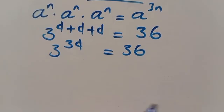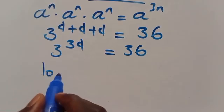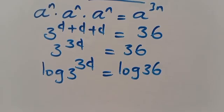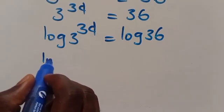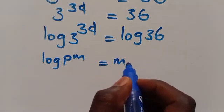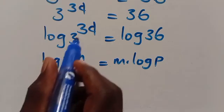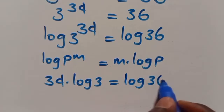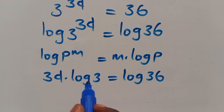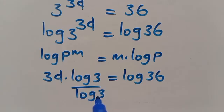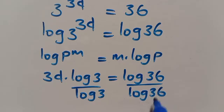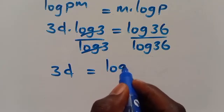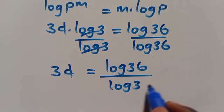Now let's introduce log on both sides: log of 3 to the power of 3D equals log 36. Recall that when we have log P to the power of m, the power m comes down to give m multiplied by log P. So we have 3D multiplied by log 3 equals log 36. Dividing both sides by log 3, we get 3D equals log 36 divided by log 3.